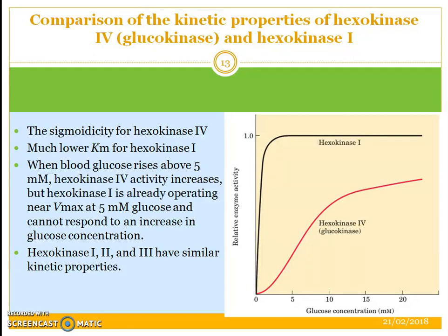When blood glucose rises above 5 mmol/L, hexokinase 4 activity increases. But hexokinase 1 is already operating near Vmax at 5 mmol glucose concentration and cannot respond to an increase in glucose concentration — therefore you see a straight line graph. Hexokinases 1, 2, and 3 have much similar kinetic properties.